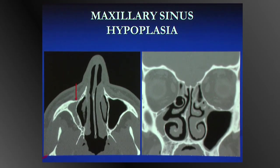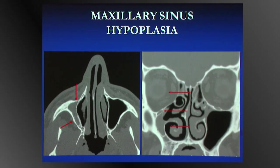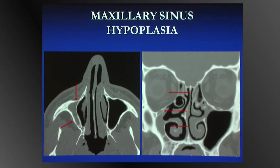You have a small antrum associated with an ipsilateral enlarged orbit and ipsilateral enlarged middle meatus. Very importantly, the uncinate process is hypoplastic and lateralised to abut the inframedial orbital wall. Because it abuts the inframedial orbital wall, it nips off the ostium and infundibulum, and so the sinus is typically opacified. Most hypoplastic sinuses we see are opacified. From a therapeutic point of view, if endoscopic surgery is planned, the uncinate process is the first entity dissected.